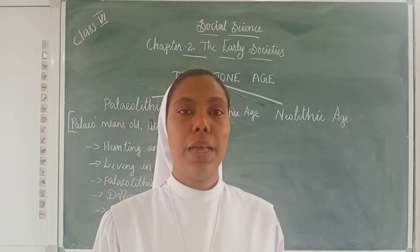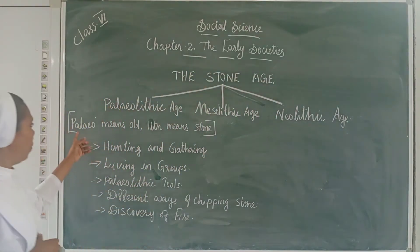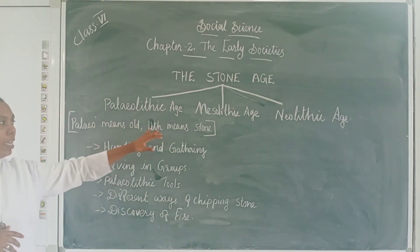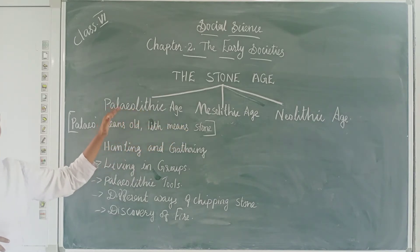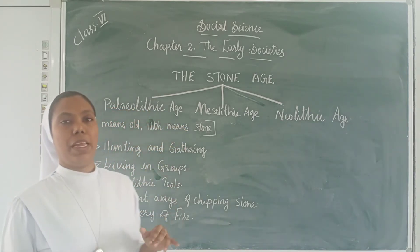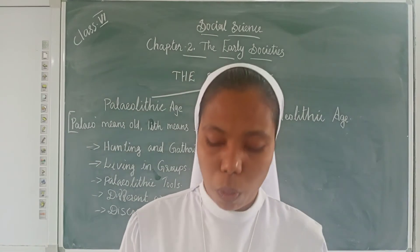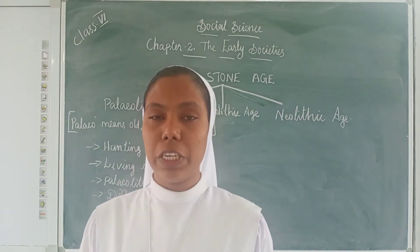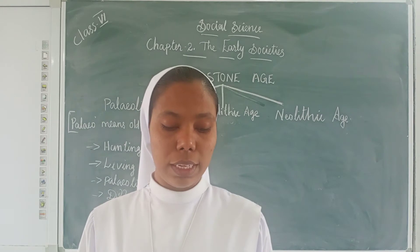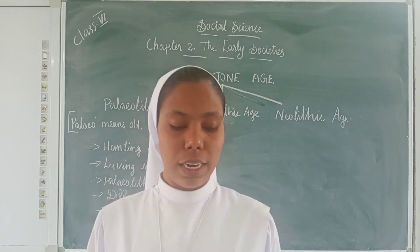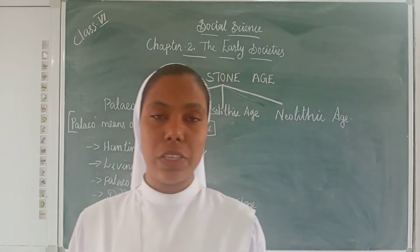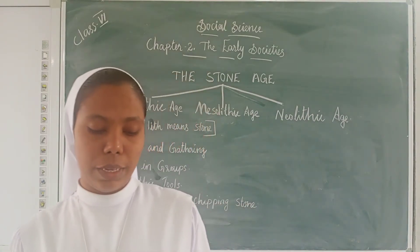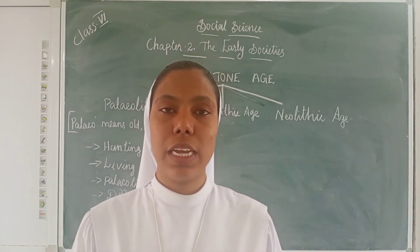Today we look at the Paleolithic Age. 'Paleo' means old and 'lithos' means stone, so Paleolithic means the Old Stone Age. The Paleolithic Age is itself divided into three periods: early Paleolithic, middle Paleolithic, and later Paleolithic.